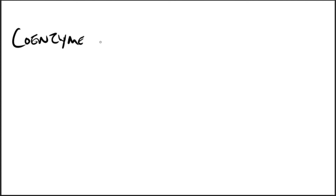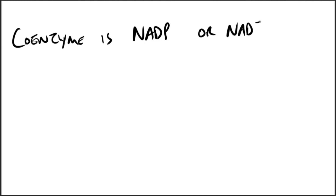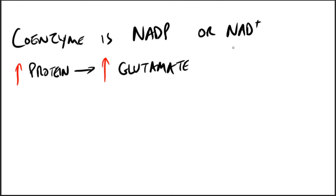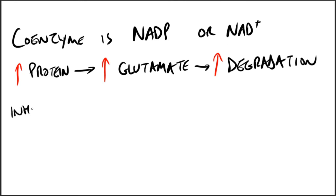The coenzyme for glutamate dehydrogenase is NAD+ or NADP+. After ingestion of a meal containing protein, glutamate levels in the liver are elevated and the reaction proceeds in the direction of amino acid degradation and the formation of ammonia. It is inhibited by GTP and activated by ADP. Thus, when energy levels are low in the cell, amino acid degradation by glutamate dehydrogenase is high, facilitating energy production from the carbon skeletons derived from amino acids.